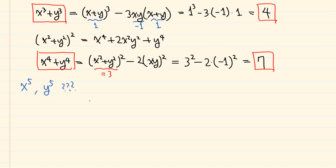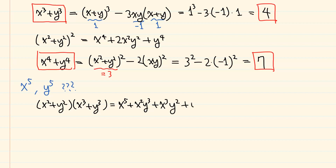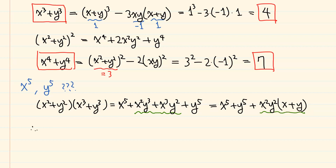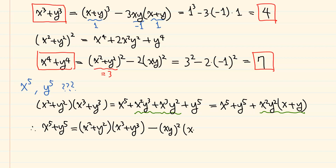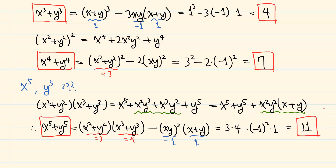For the power of 5, notice that x to the 5th and y to the 5th terms appear when we expand x squared plus y squared times x cubed plus y cubed, which gives x to the power of 5 plus x squared y cubed plus x cubed y squared plus y to the power of 5. The middle part can be written as x squared y squared times x plus y. Therefore, x to the power of 5 plus y to the power of 5 equals x squared plus y squared times x cubed plus y cubed minus xy squared times x plus y. This gives 3 times 4 minus minus 1 squared times 1, which is 11.